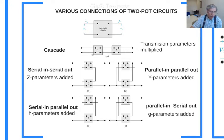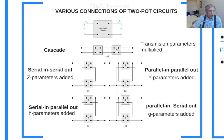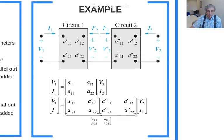It is theoretically easy to prove that if you know the transmission parameters of the first and second two-port circuits, then the new circuit's transmission parameters are the multiplication of the matrices of the two cascade-connected two-port circuits. So this is circuit one and that is circuit two. These are circuit one's transmission parameters and those are circuit two's transmission parameters.